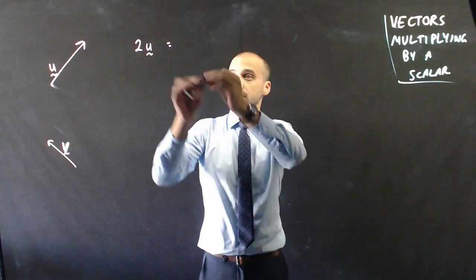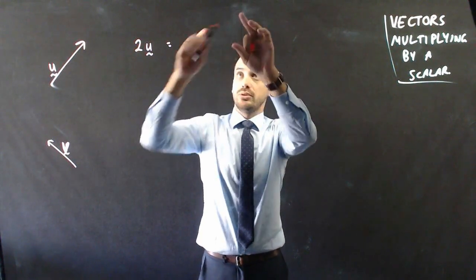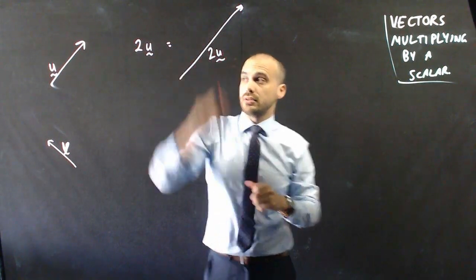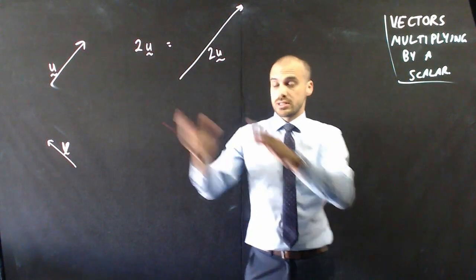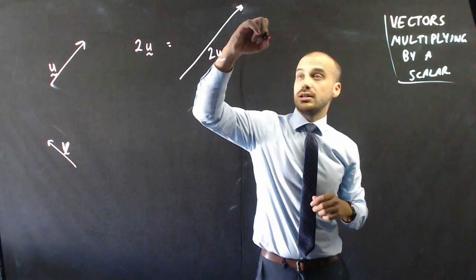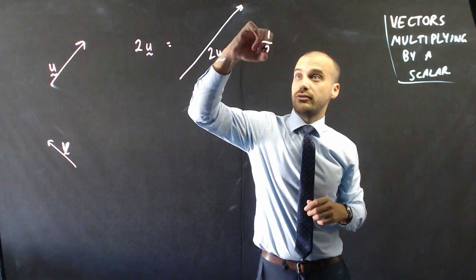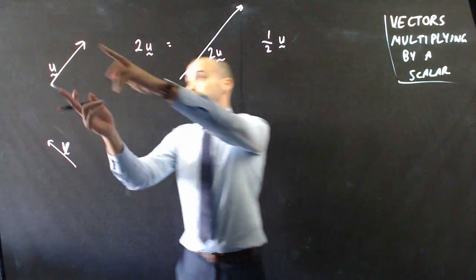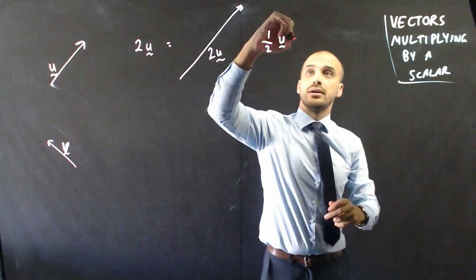Now I've lost my spot. That is vector 2u. Same direction, twice as long. If I wanted to do vector half u, you can probably guess it's going to be half.